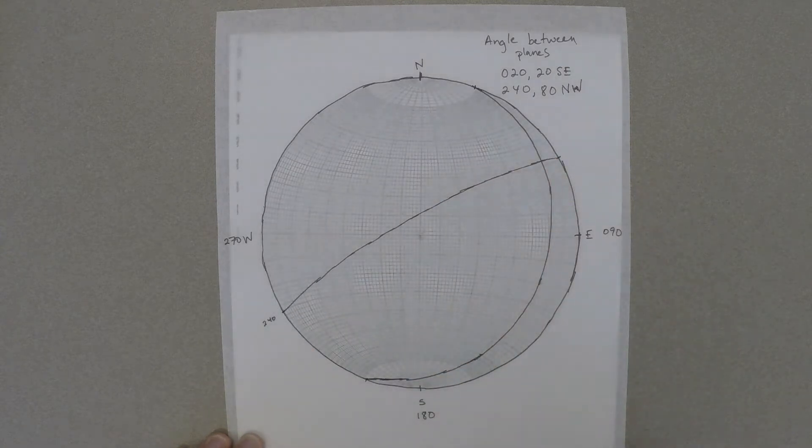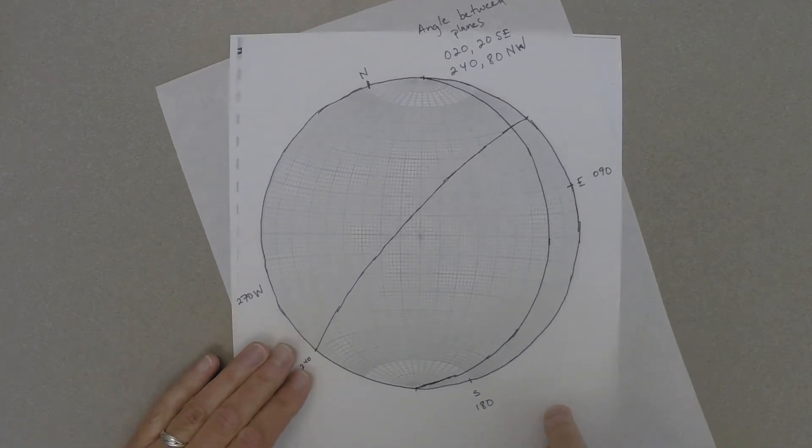To measure the angle between these two planes, we want to actually measure that angle in a plane that's perpendicular to both. And we're going to do that by first plotting the poles to both of the planes.